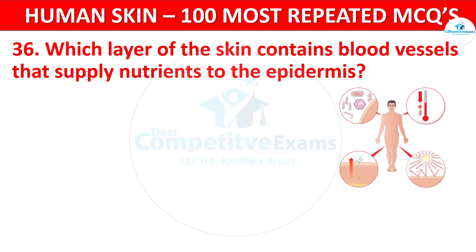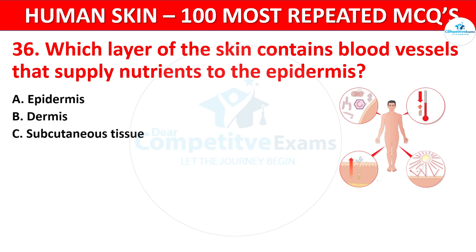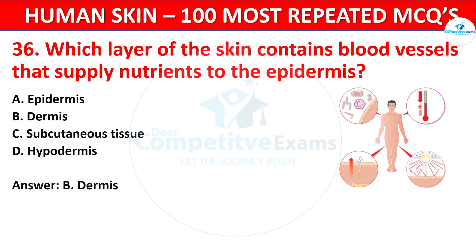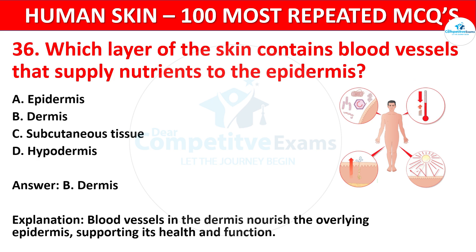Question 36. Which layer of the skin contains blood vessels that supply nutrients to the epidermis? Your options: Epidermis, Dermis, Subcutaneous tissue, or Hypodermis. The correct answer is Dermis. Blood vessels in the dermis nourish the overlying epidermis, supporting its health and function.